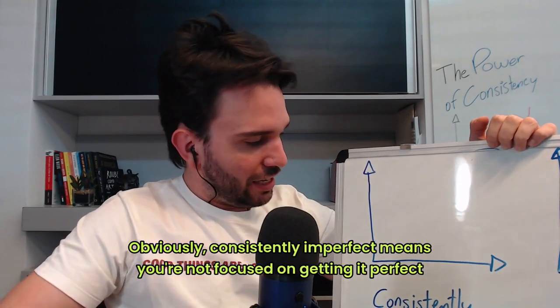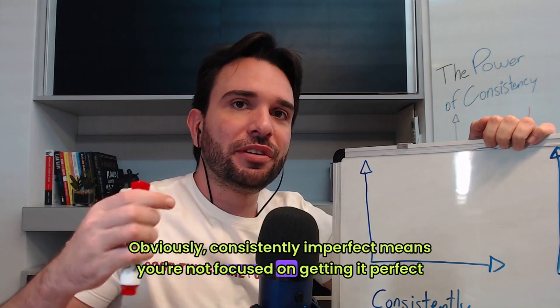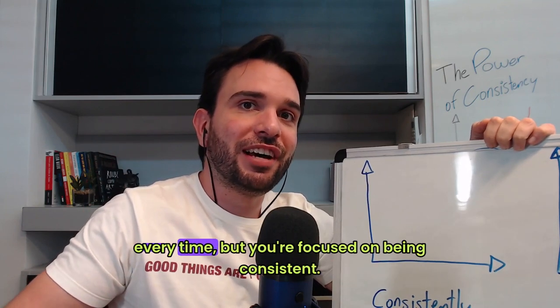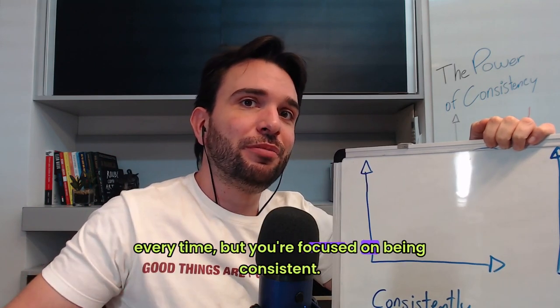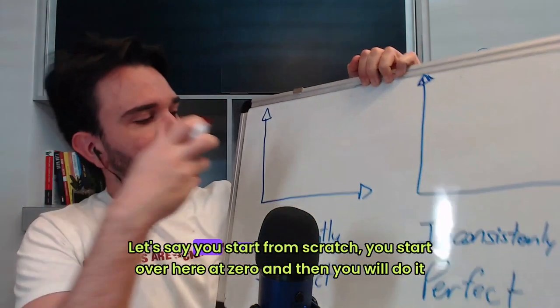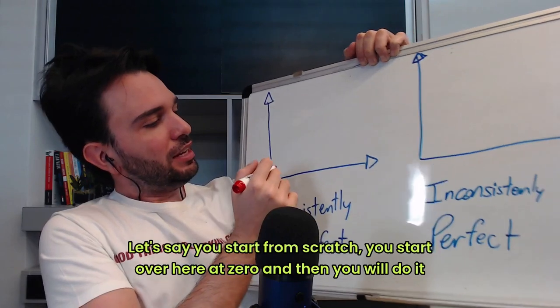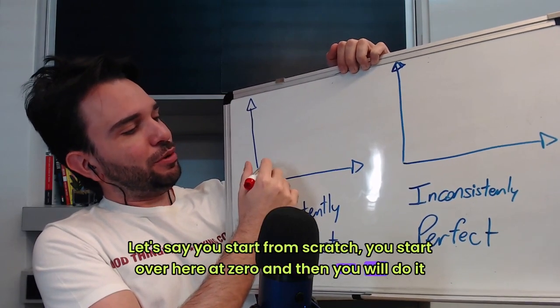So what's the difference? Obviously, consistently imperfect means you're not focused on getting it perfect every time, but you're focused on being consistent. So there will be days. Let's say you start from scratch, you start over here zero.